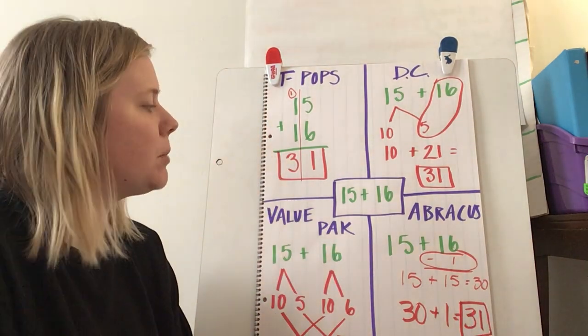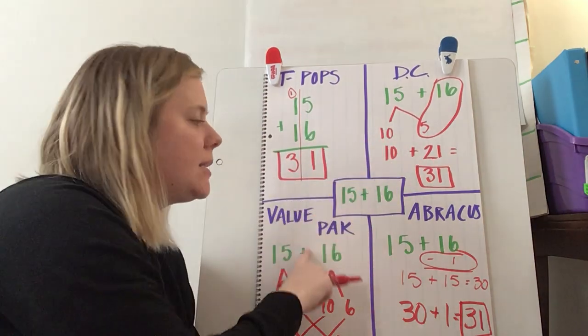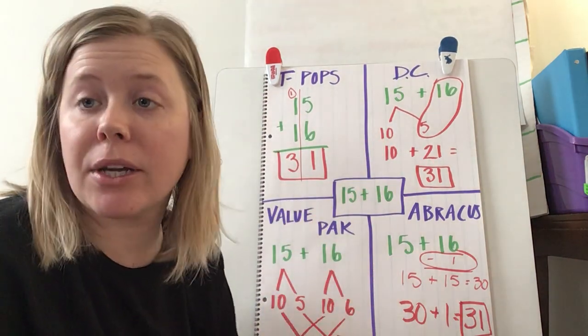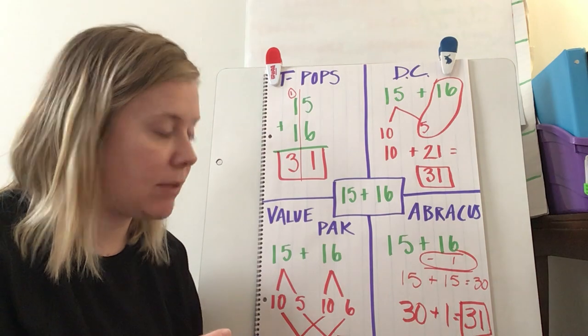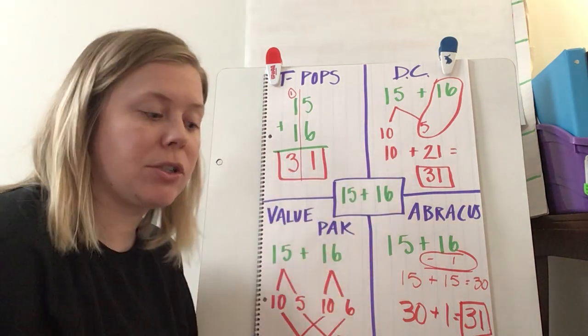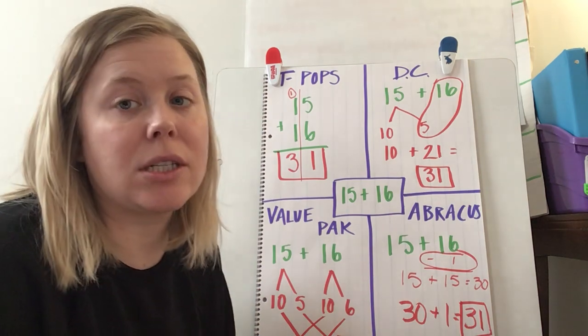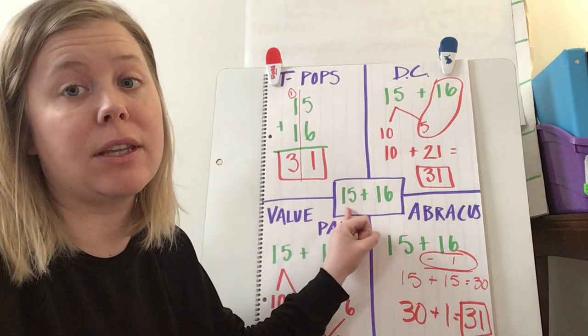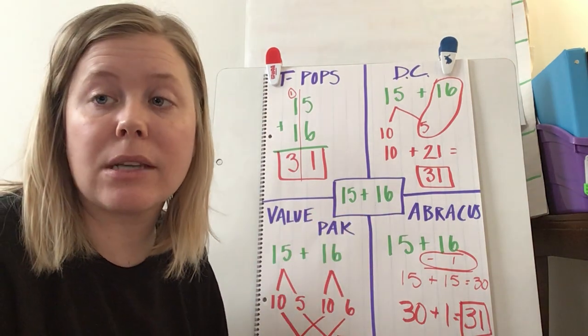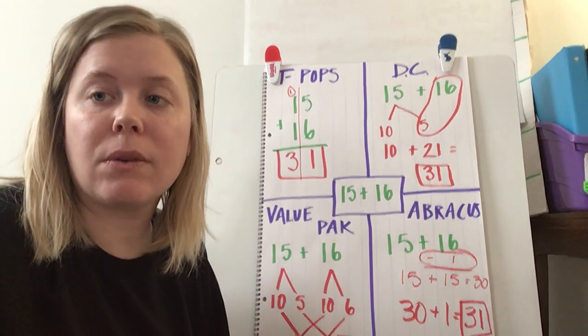I know you guys are very familiar with T-Pops, DC, value pack. If you like Abrakes, have at it. If you want to stick with these ones, do whatever works for you. All your addition on here is three-digit plus three-digit addition, so it's going to be more difficult than this. I just wanted to give you a simple example. There's your review.